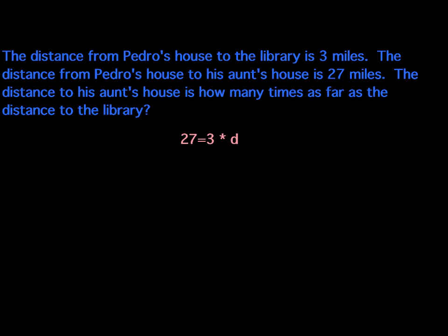So let's take a look at this one. The distance from Pedro's house to the library is three miles. The distance from Pedro's house to his aunt's house is 27 miles. The distance to his aunt's house is how many times as far as the distance to the library? So I gave you a little equation here, and I want you to think about why did I give you this particular equation with this word problem. 27 equals 3, and remember that asterisk means multiply, times D. Why would I give you that problem? Think about that for a minute. It tells us what.